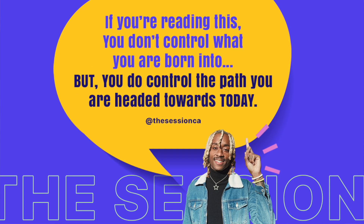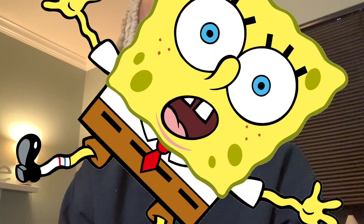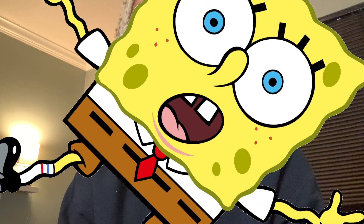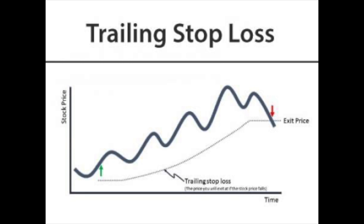A trailing stop limit order is designed to allow an investor to specify a limit on the maximum possible loss without setting a limit on the maximum possible gain. The limit order price is also continually recalculated based on the limit offset. A selling trailing stop order sets the stop price at a fixed amount below the market price. As the market price rises, the stop price rises by the trail amount, but if the stock price falls, the stop loss price doesn't change, and a market order is submitted when the stop price is hit.